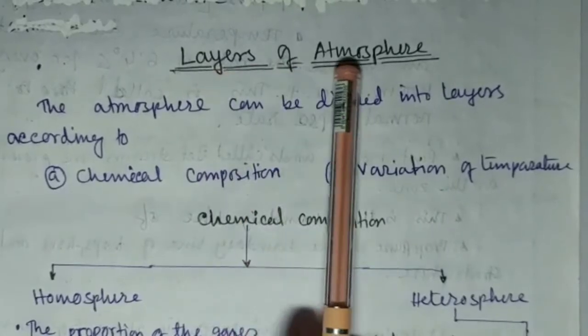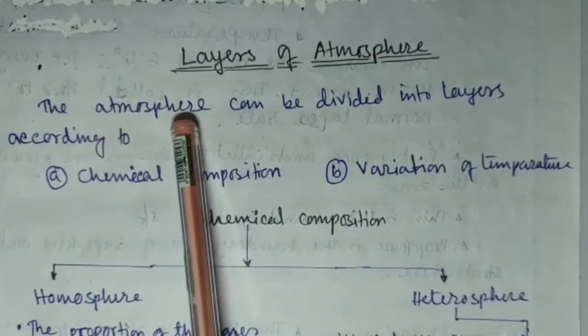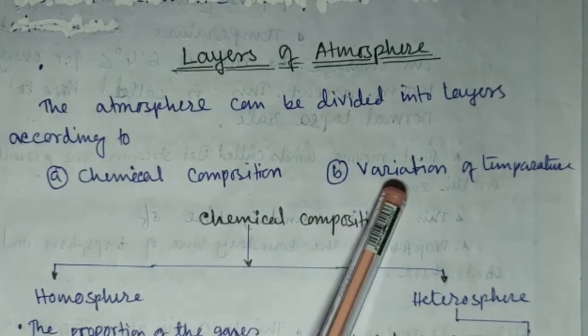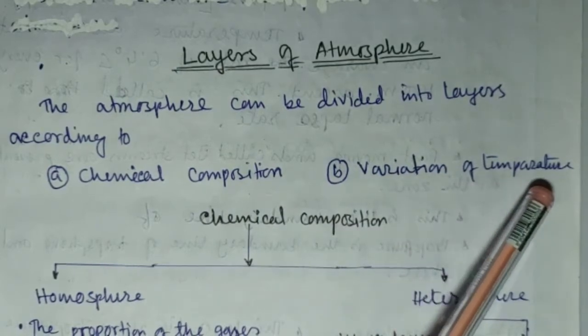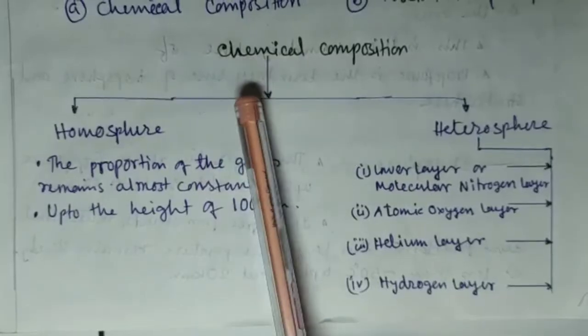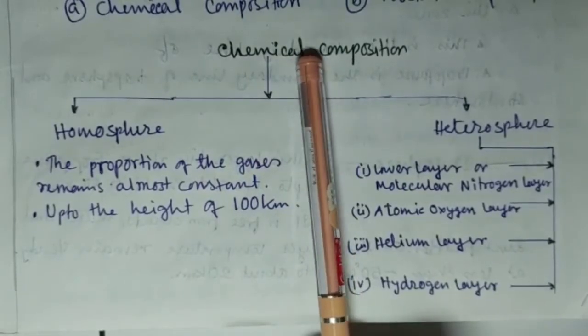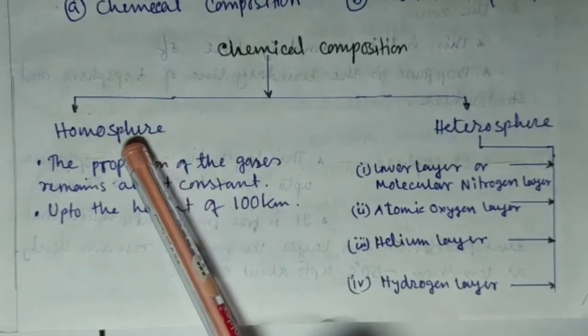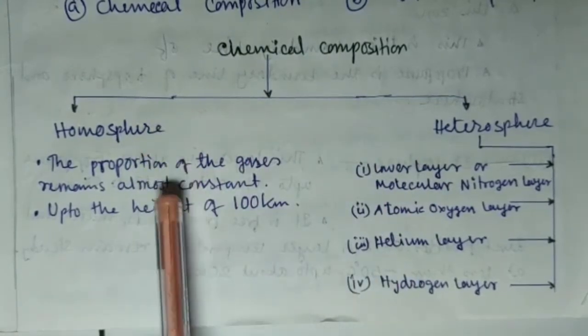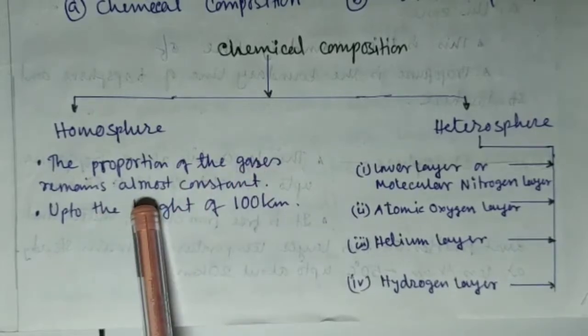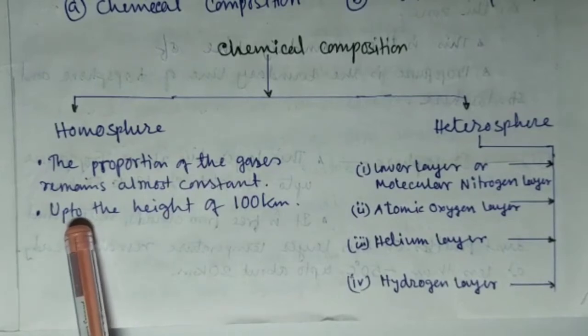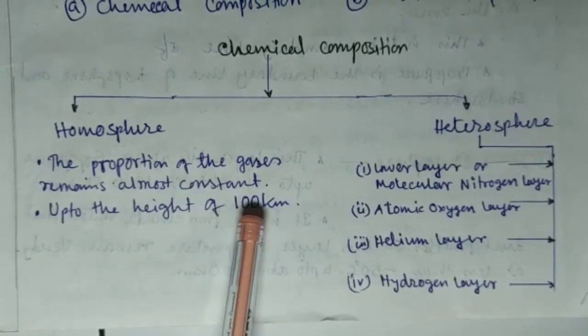Layer of atmosphere. The atmosphere can be divided into layers according to chemical composition and variation of temperature. Chemical composition is divided in two spheres: homosphere and heterosphere. Homosphere is the portion where gases remain almost constant. The height up to 100 kilometer.